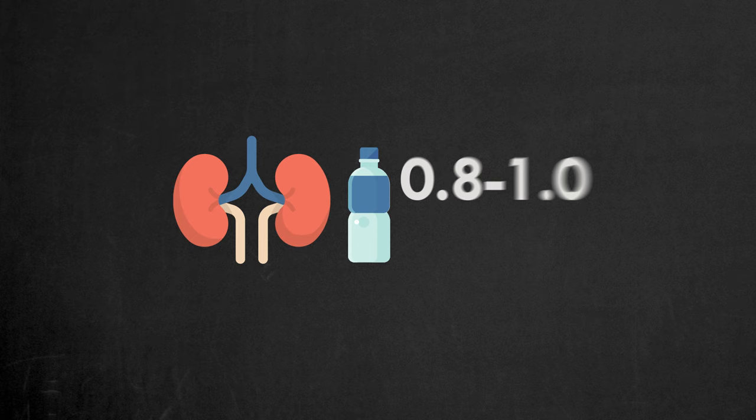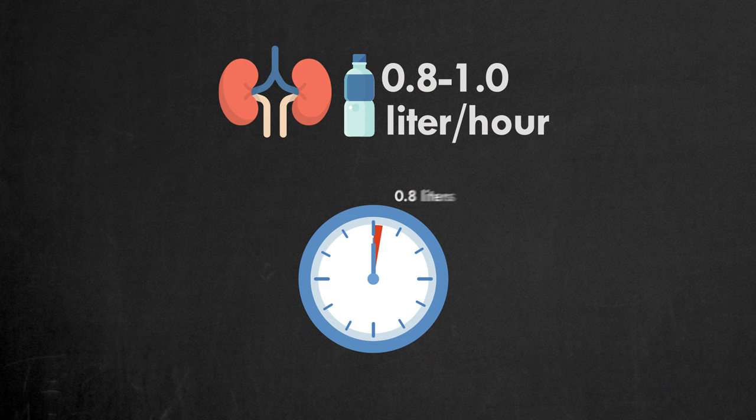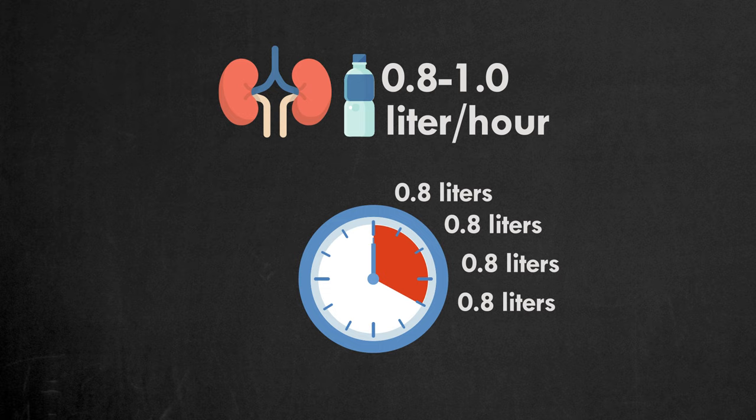How to drink it safely: The kidneys cannot excrete more than 0.8 to 1.0 liters per hour. So the safe amount is to consume 0.8 liters per hour and start 3 to 4 hours before the drug test.